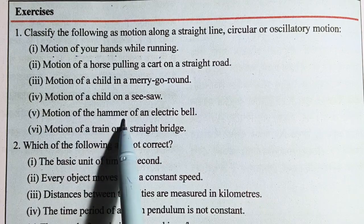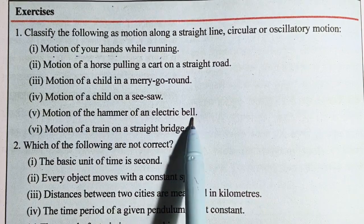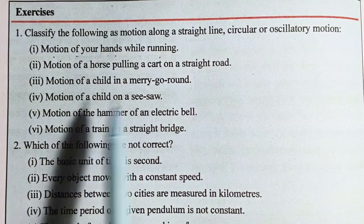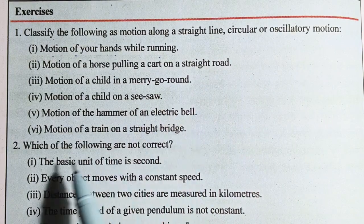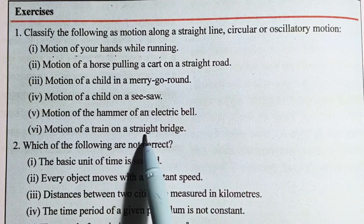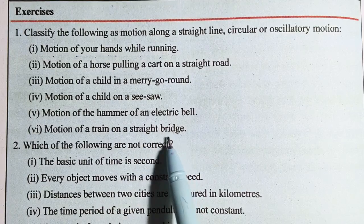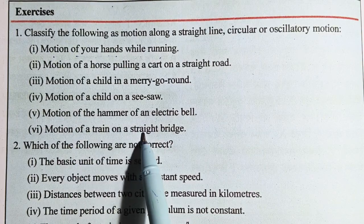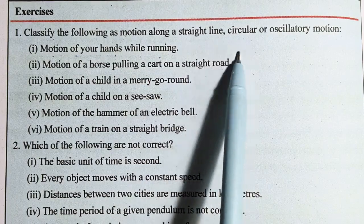The motion of a hammer of an electric bell is an oscillatory motion. The motion of a hammer is a straight line motion.